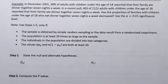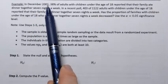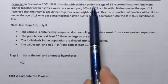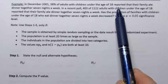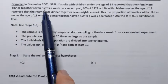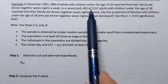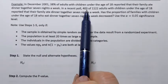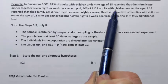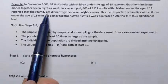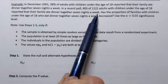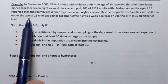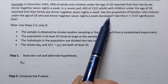Let's do an example where we have to conduct hypothesis testing for population proportion using the p-value approach. In this example, it says that in December 2001, 38% of adults with children under the age of 18 reported that their family ate dinner together seven nights a week. In a recent poll, 403 of 1,122 adults with children under the age of 18 reported the same. Has the proportion of families with children under the age of 18 who ate dinner together seven nights a week decreased?